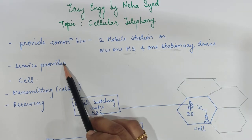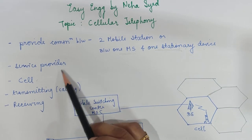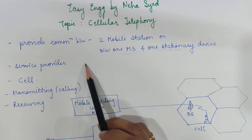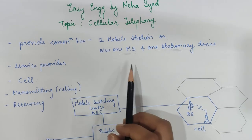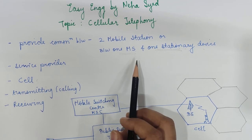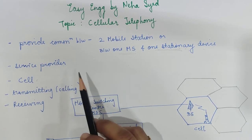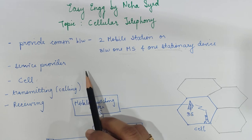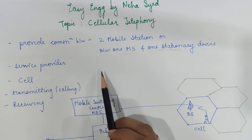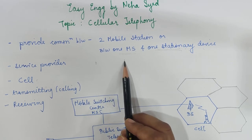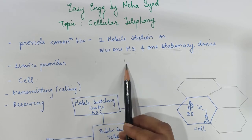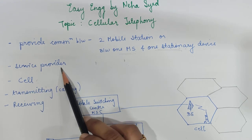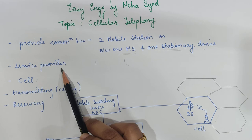There are service providers available that are used for locating or tracking the call, and for assigning the channel to that particular call. It is also keeping track for the purpose of when one mobile station is moving from one region to another region — that is the responsibility of the service provider to keep track of that particular call.